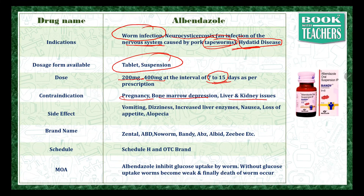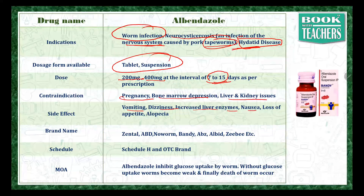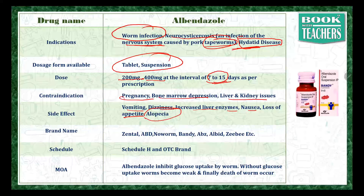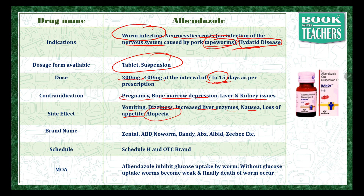The most common side effects associated with albendazole are vomiting, dizziness, increased liver enzymes, nausea, and loss of appetite. In some cases, alopecia is also seen — that means hair fall. Severe hair fall can be seen in cases of alopecia.